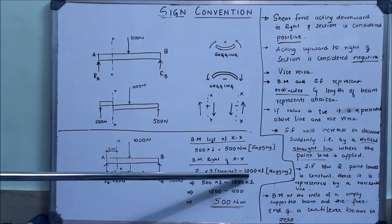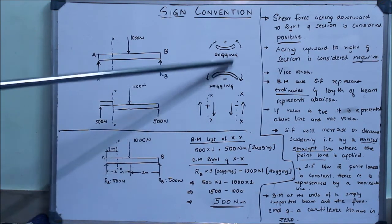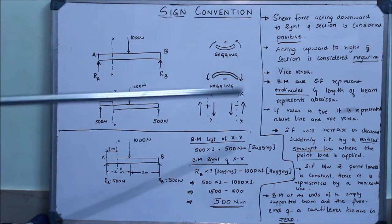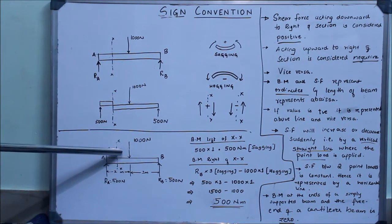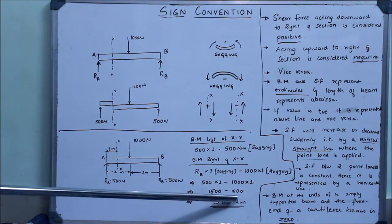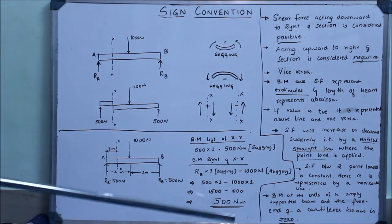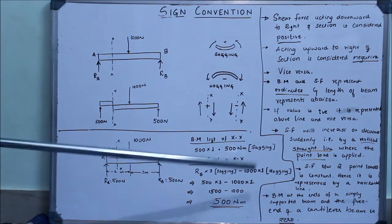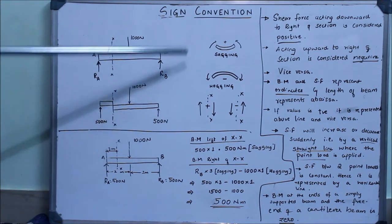Then we come to the bending moment caused by the 1000 newton load, which is negative 1000 × 1. We take it as negative here because this is causing the beam to hog. So we get 500 × 3 minus 1000 × 1, that is 1500 minus 1000, which is 500 newton-meters. From this you can see that whether you take it to the left or right of the section, the bending moment is the same at that section. You take whichever side has fewer forces so the calculation becomes easier.